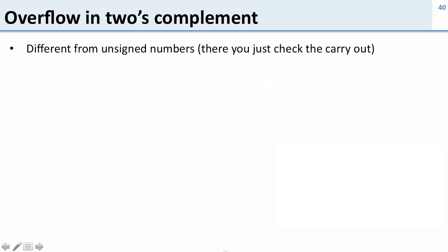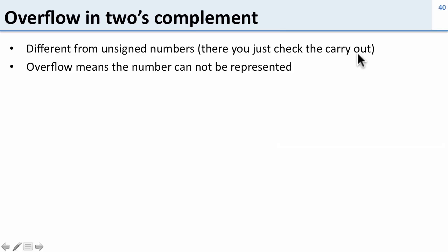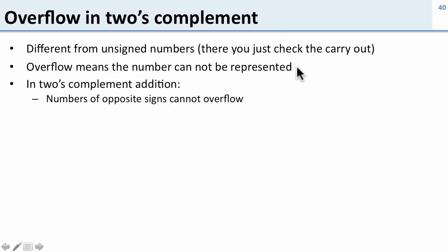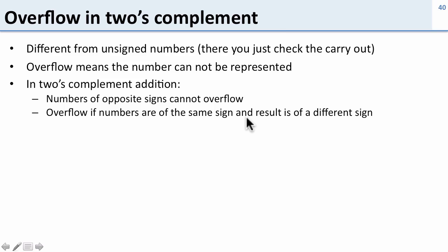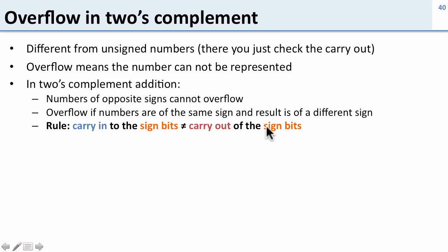So overflows are a little different in 2's complement. For unsigned numbers we just check the carry out of the most significant bit — that meant we didn't have enough bits. In 2's complement this is different. Numbers of opposite signs cannot overflow: if they're of opposite signs you're never going to get something too negative or too positive. Overflow occurs when numbers are of the same sign and the result is a different sign. So if I add two negative numbers and get a positive result, that's an overflow; or two positives giving a negative. The rule is: if the carry into the sign bit is not equal to the carry out of the sign bit, then we have an overflow.